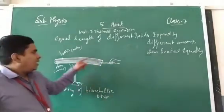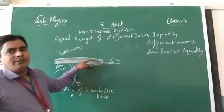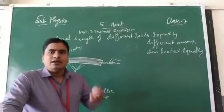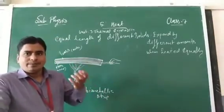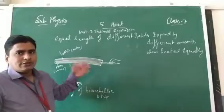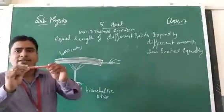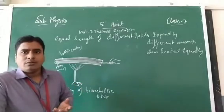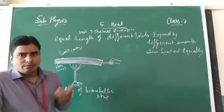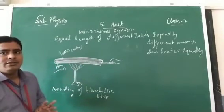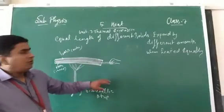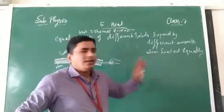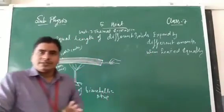This is the characteristic of the two metals, brass and iron. In brass, the molecules are not as tightly packed as compared to iron, so it shows more expansion. Both are solid and metal, but brass shows more expansion. This concludes that equal length of different solids expand by different amounts when heated equally.